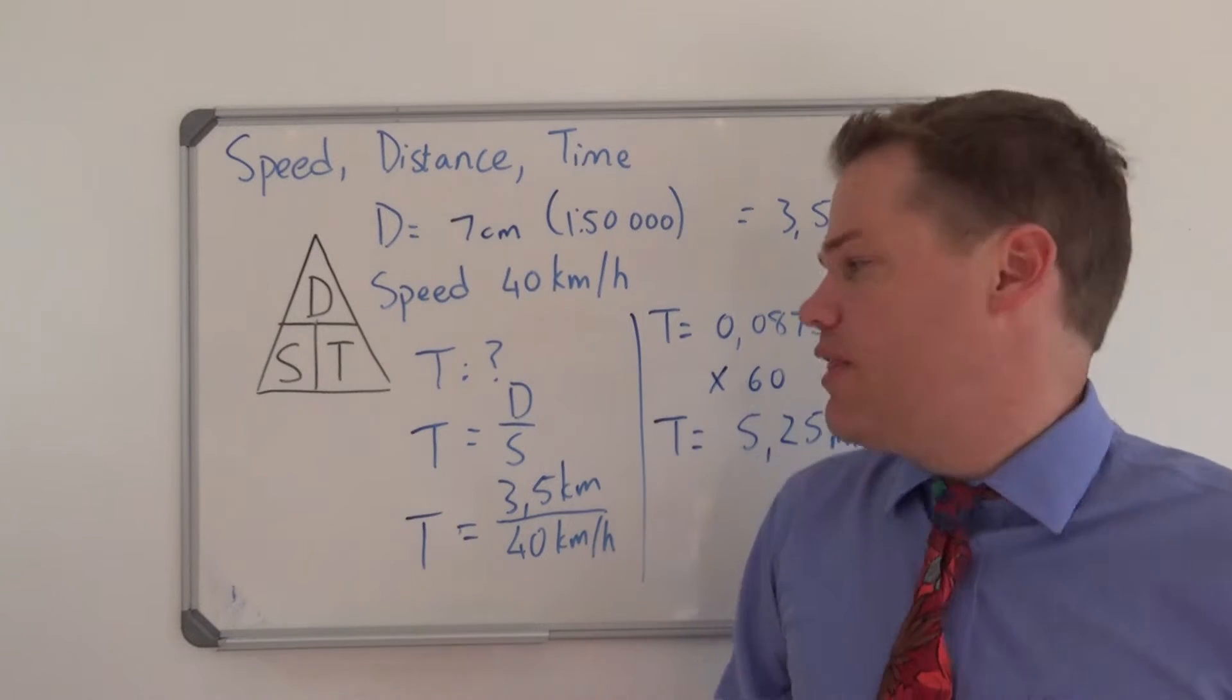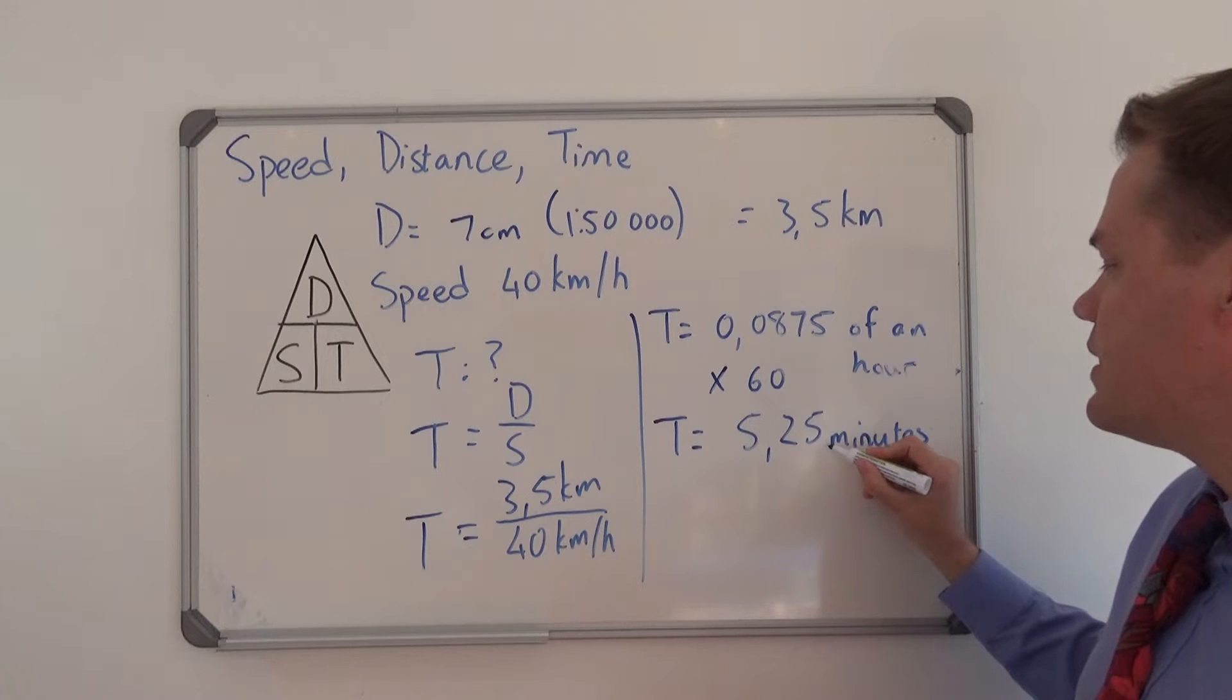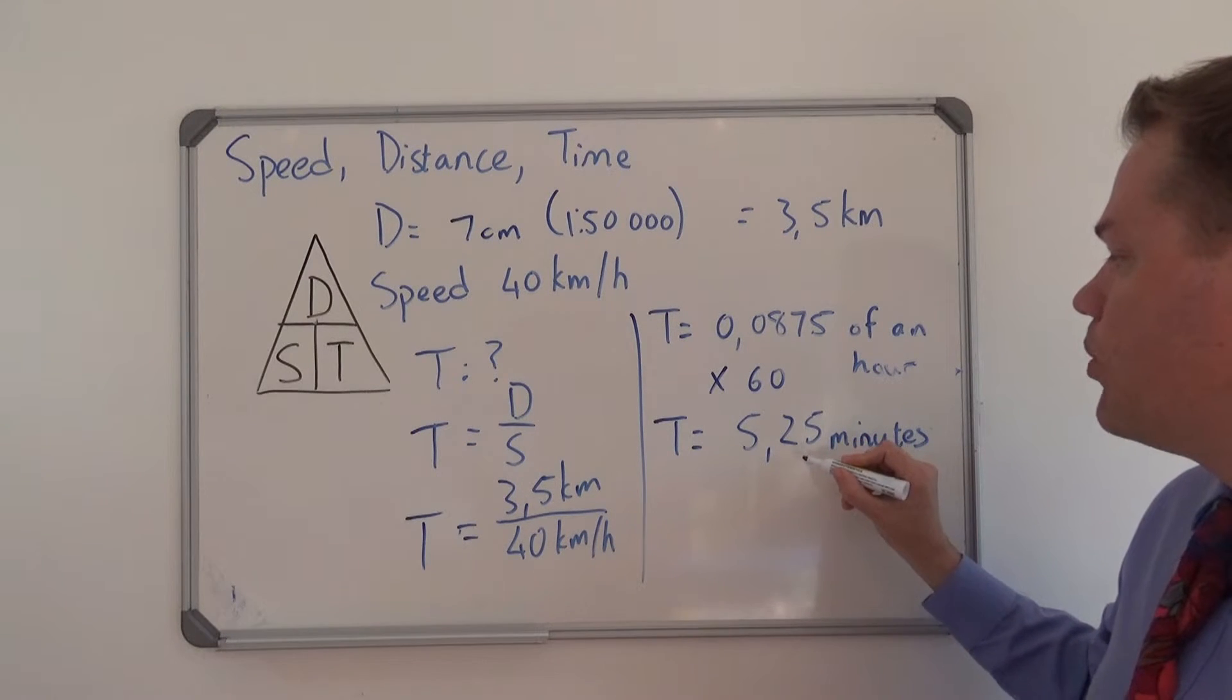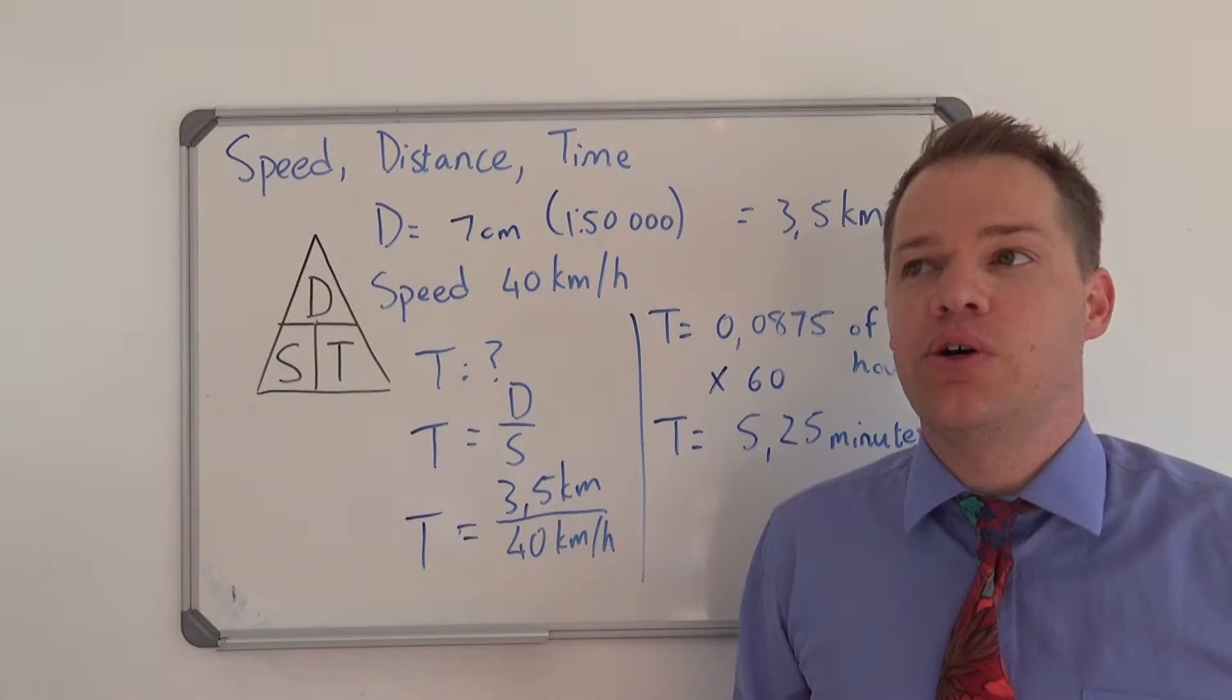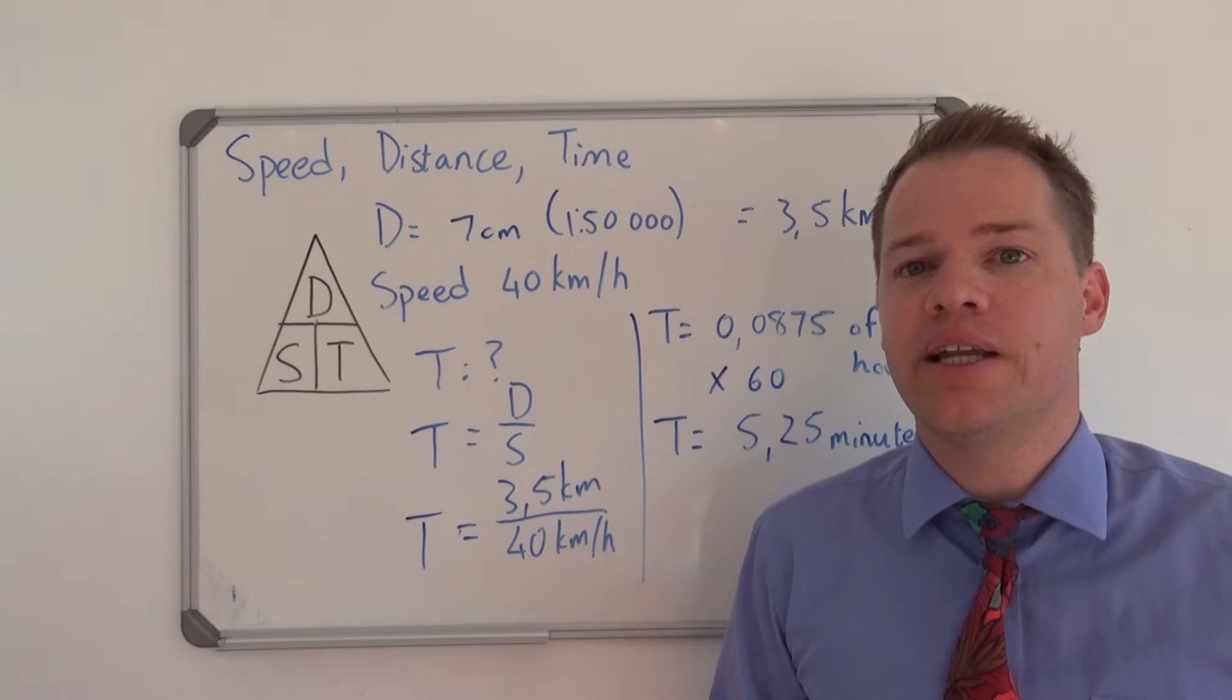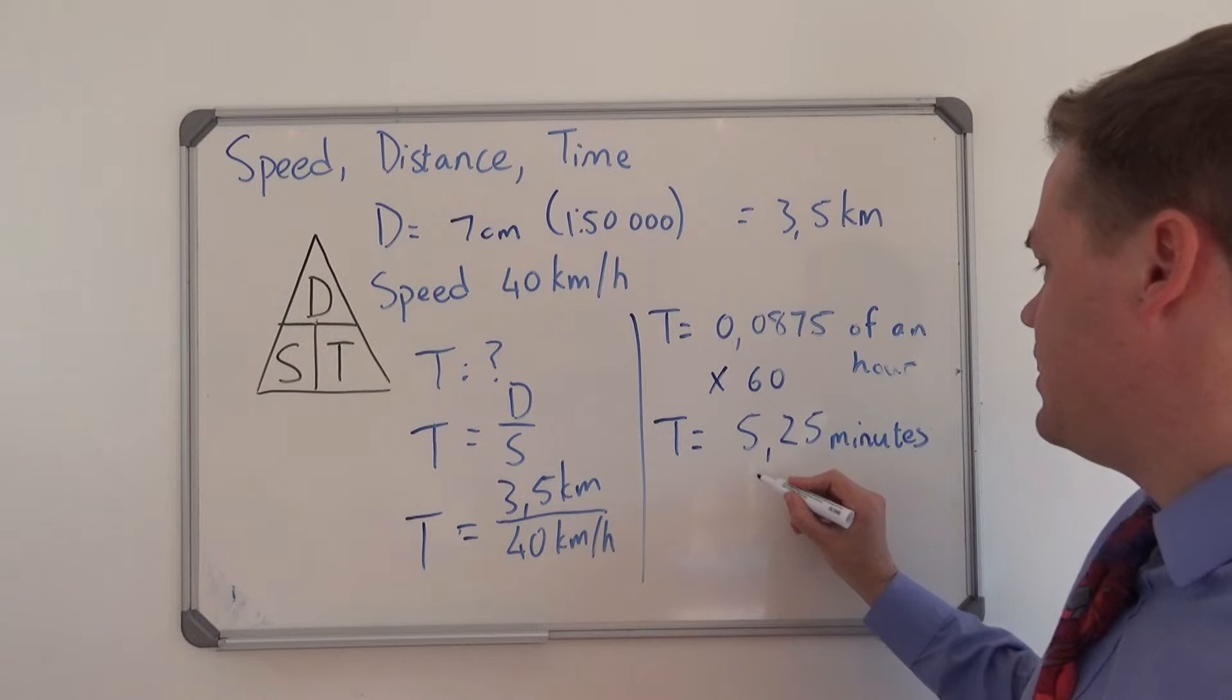So that is your answer. Just remember that if we say 5.25 minutes, it's not 25 seconds. This is 0.25, in other words it's a quarter of a minute. So what is a quarter of a minute? It's 15 seconds. So this is actually 5 minutes and 15 seconds.